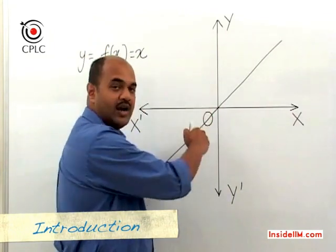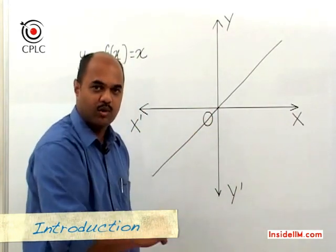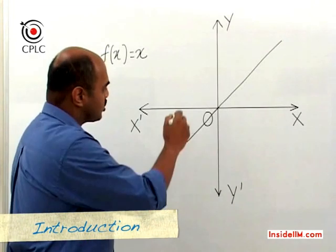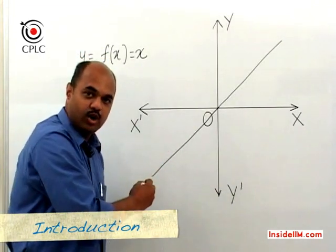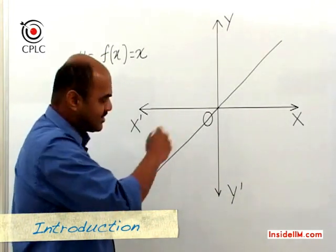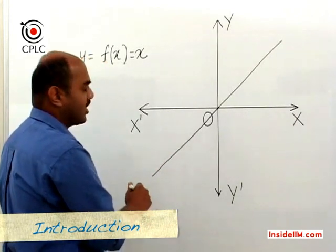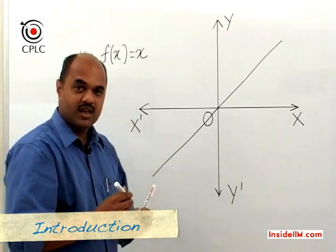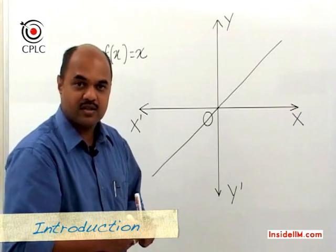At x = 1, y also has to be 1; at x = 2, y has to be 2, and so on. So this particular line that we have drawn is the graph for the identity function, f(x) = x.